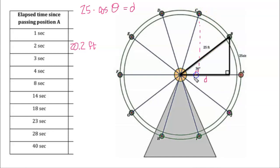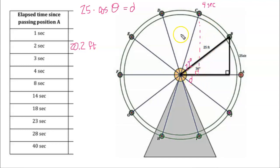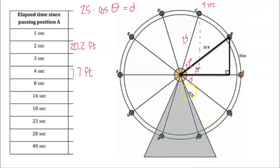To find point C — the 4-second mark — 4 times 18 gives a 72-degree angle, and the radius is still 25. Calculating 25 times cosine of 72 degrees gives a distance D of 7.7 feet. That makes sense because it's much shorter than 25 and very close to the center, so 7.7 is absolutely reasonable.